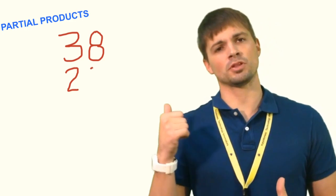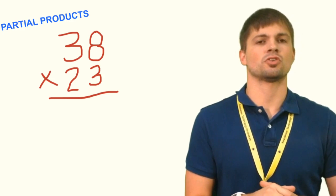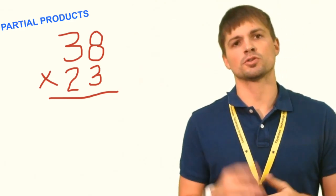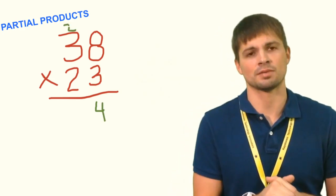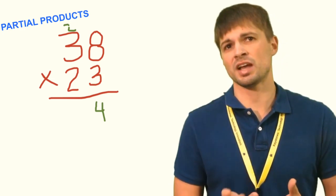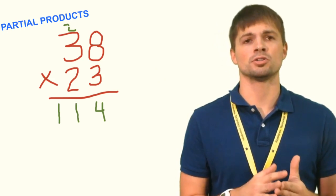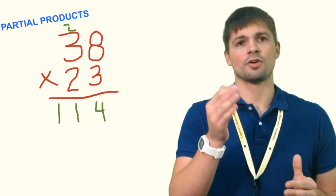Again, you must line up 38 and 23. They have the same number of digits, so due to the commutative property it doesn't matter which is on top, but I'm going to put the larger number, 38, on top and multiply by 23. We start with 3 times 8, which is 24 — put down the 4 and carry the 2. Then 3 times 3 is 9, plus the carried 2 gives us 11. So our first partial product is 114.